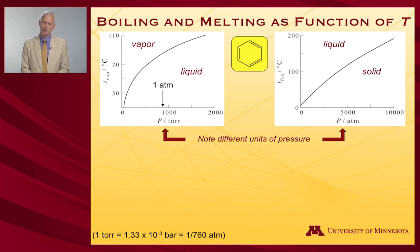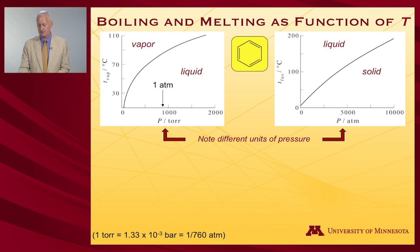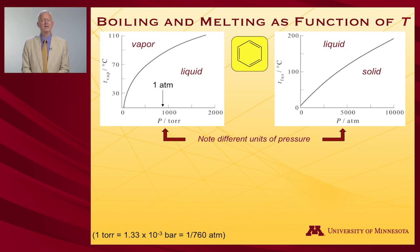To give a feel for pressure units: 1 Torr — short for Torricelli — is 1/760th of an atmosphere and equals 1.33 millibar, or 1.33 × 10⁻³ bar. Multiplying 1.33 × 10⁻³ by 760 gives a number very close to 1, noting that a bar differs from an atmosphere by only about 1%. That small difference means people are sometimes sloppy about the distinction, so it's important to keep track of units.